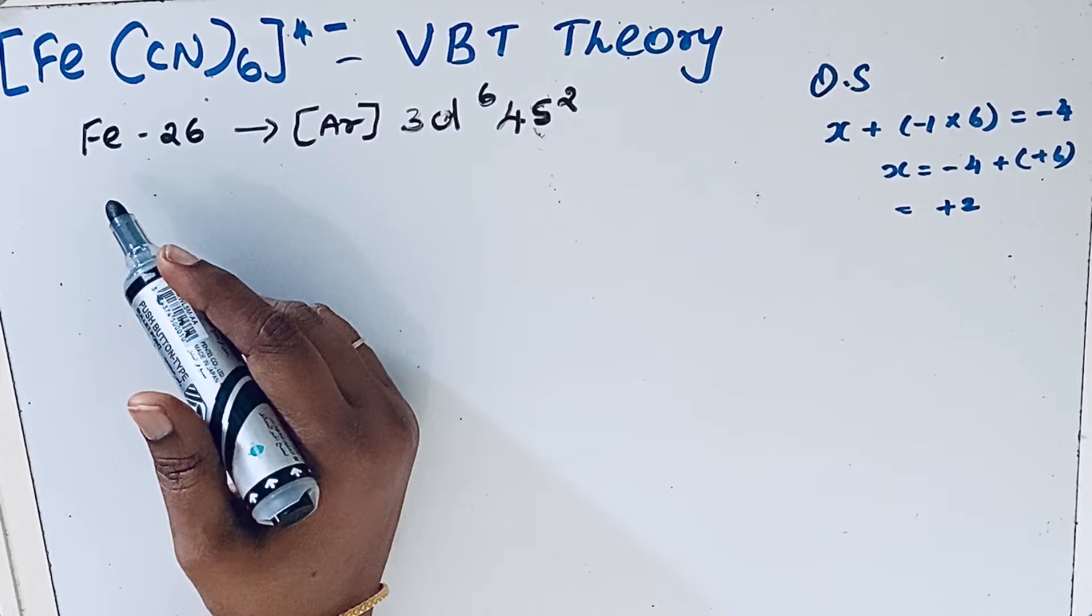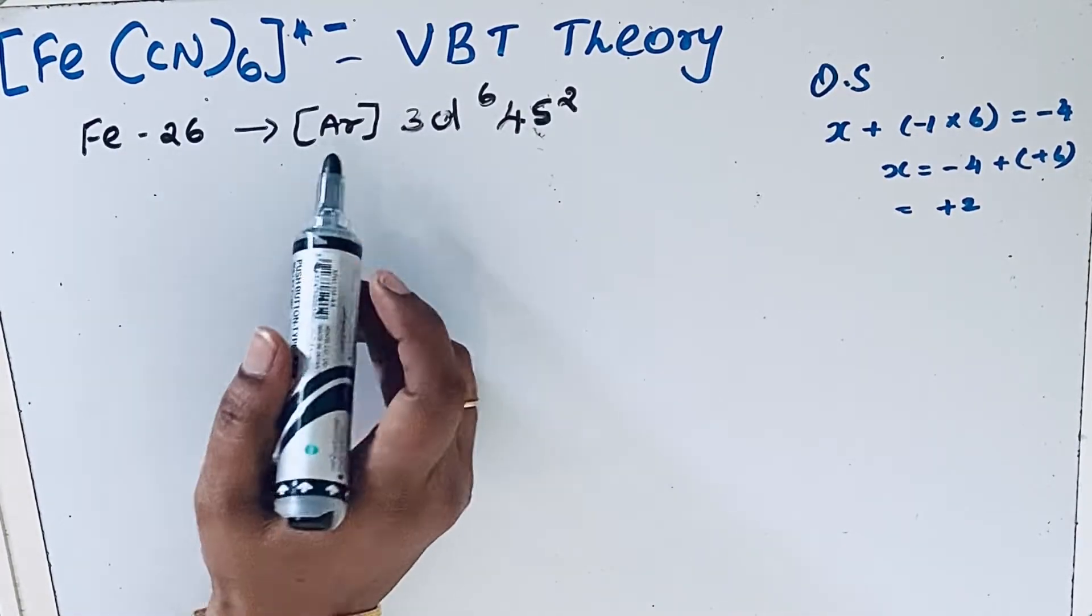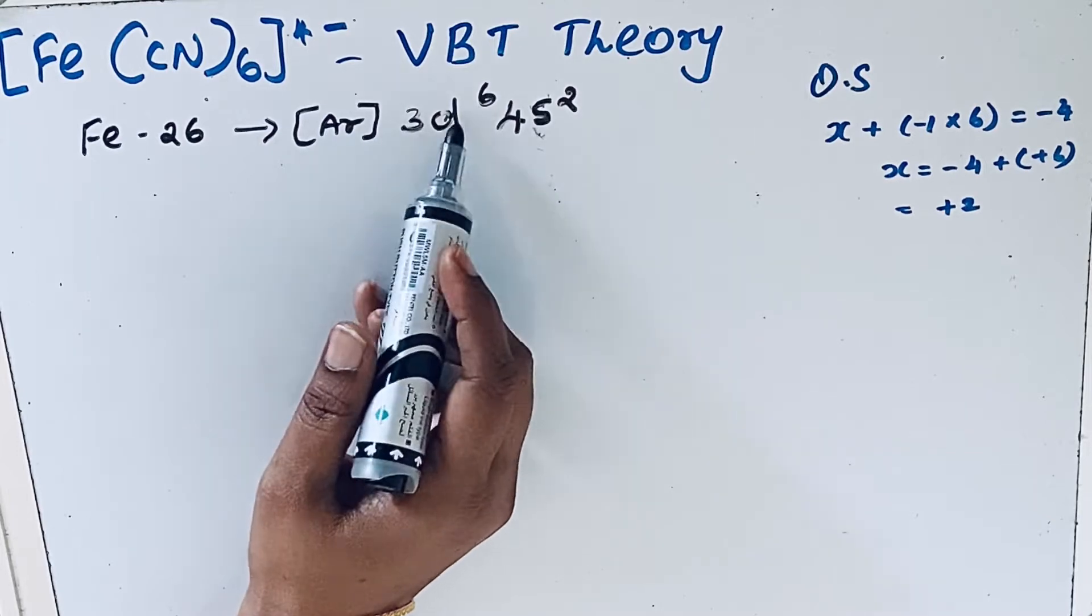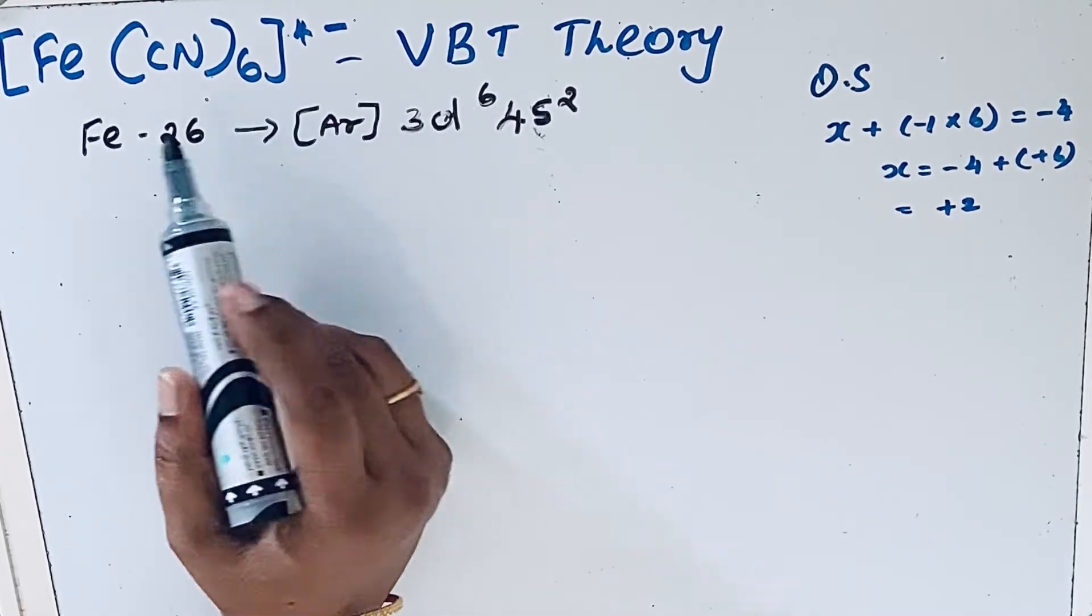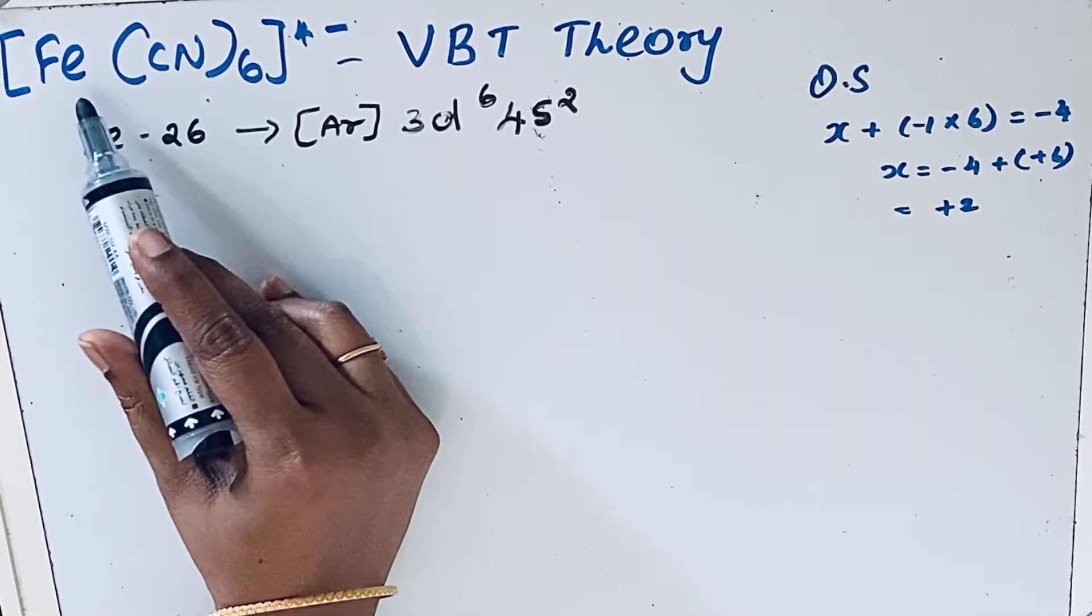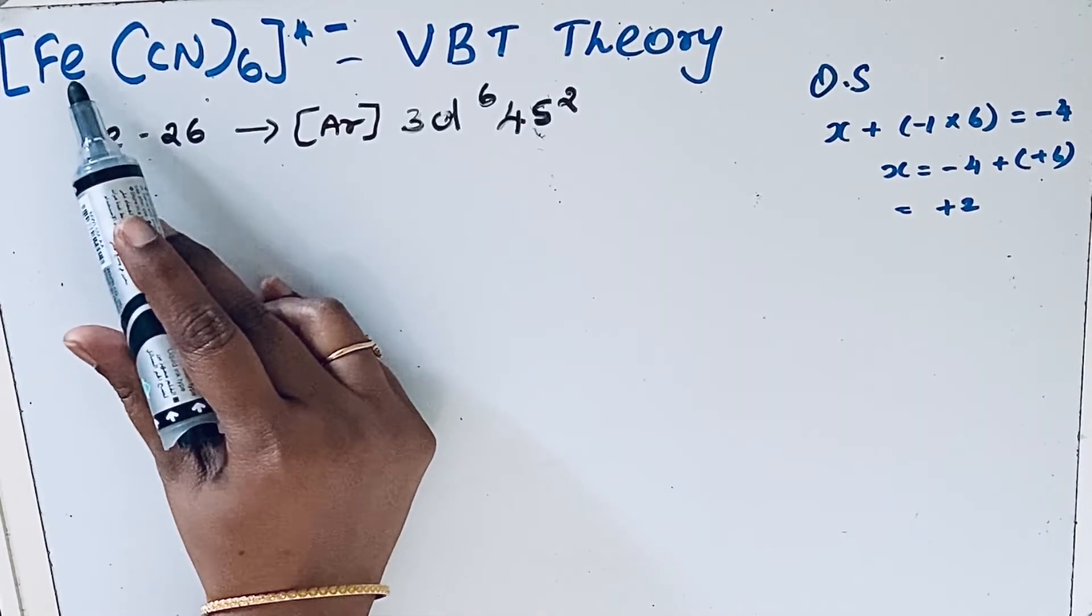Iron is the central atom with atomic number 26 and electronic configuration [Ar] 3d6 4s2. Before writing the chemical bonding, we need to find the oxidation state of this central atom, Fe.